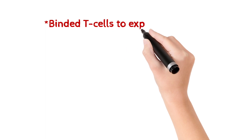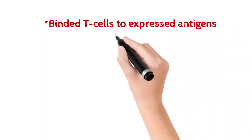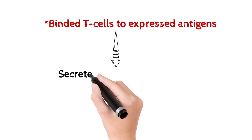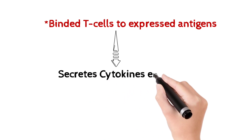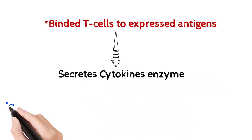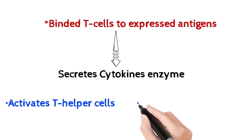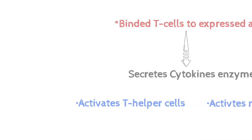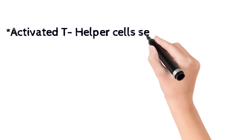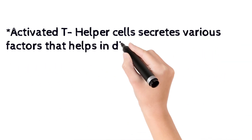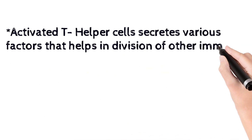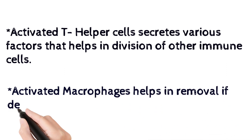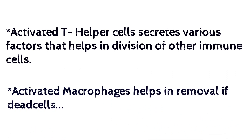T-lymphocytes also undergo apoptosis processes. They also secrete cytokine enzymes. These cytokines activate T-helper cells, which in turn activate macrophages. Activated T-helper cells secrete various factors that help in the division of other immune cells. Activated macrophages and dendritic cells help in the removal of dead cells.